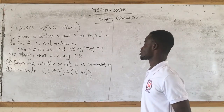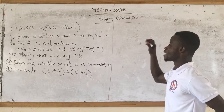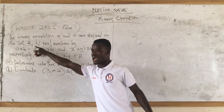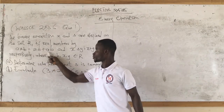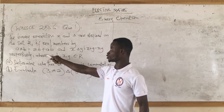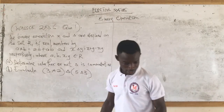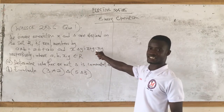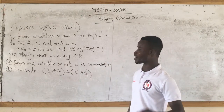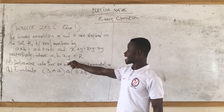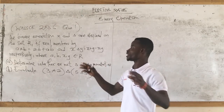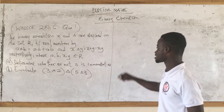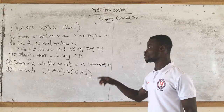This is WASSCE 2006 Question 1 and 3. A binary operation star and delta are defined on the set of real numbers by a star b and a delta b equals a plus b minus ab respectively, where a and b belong to all real numbers.